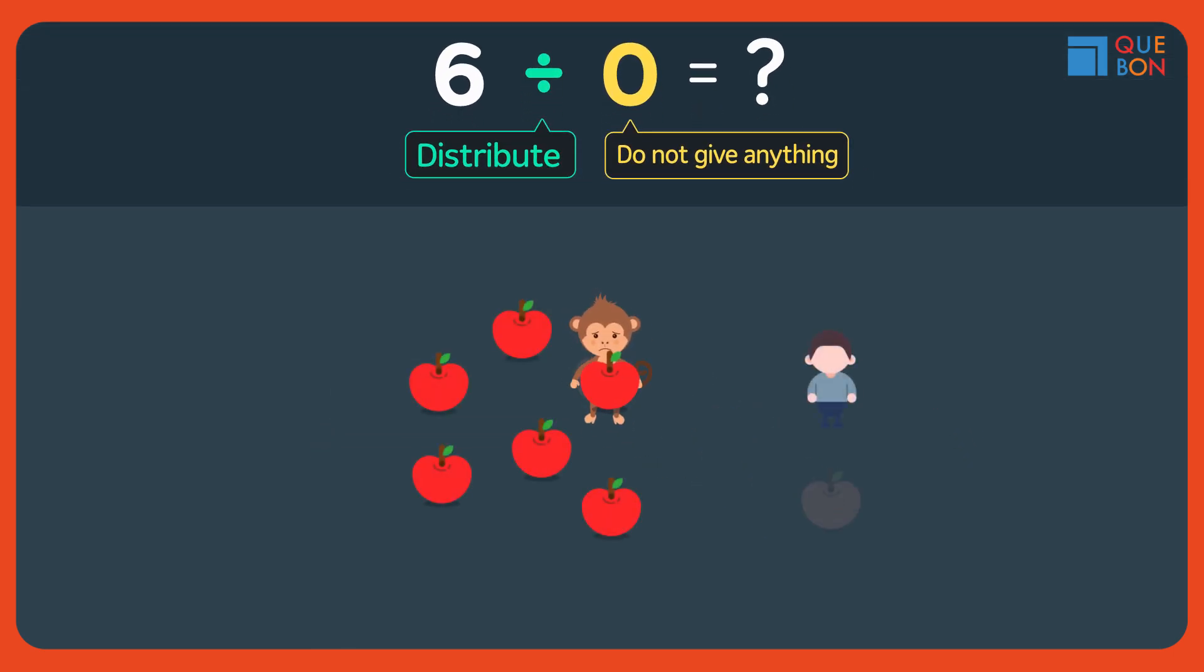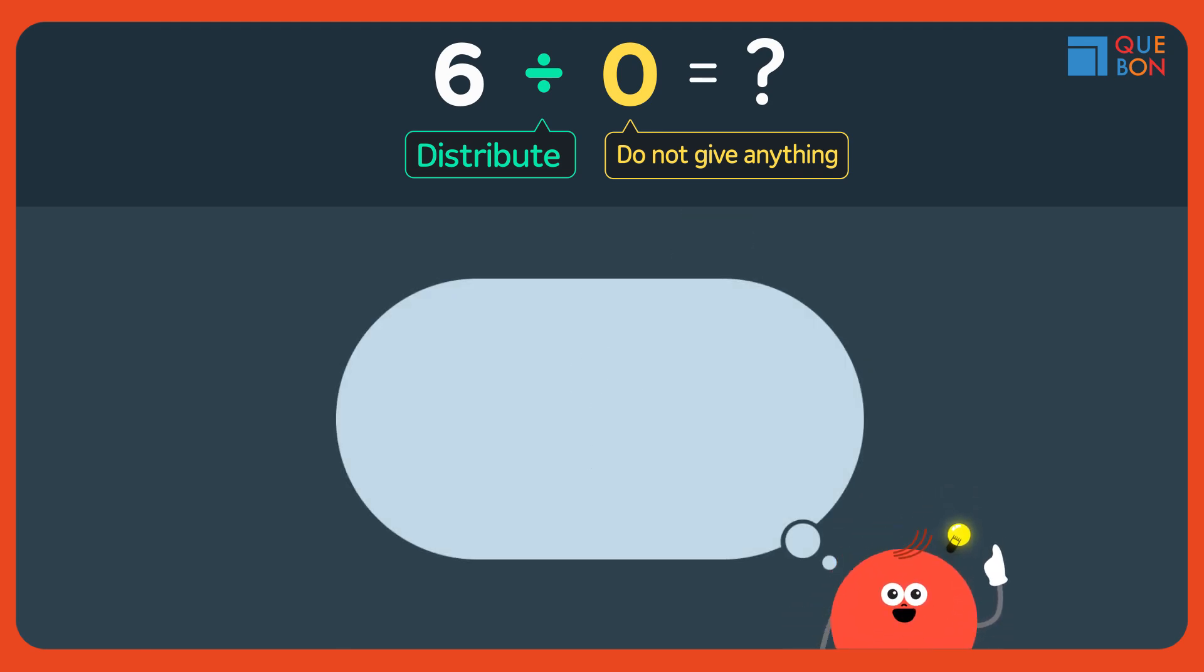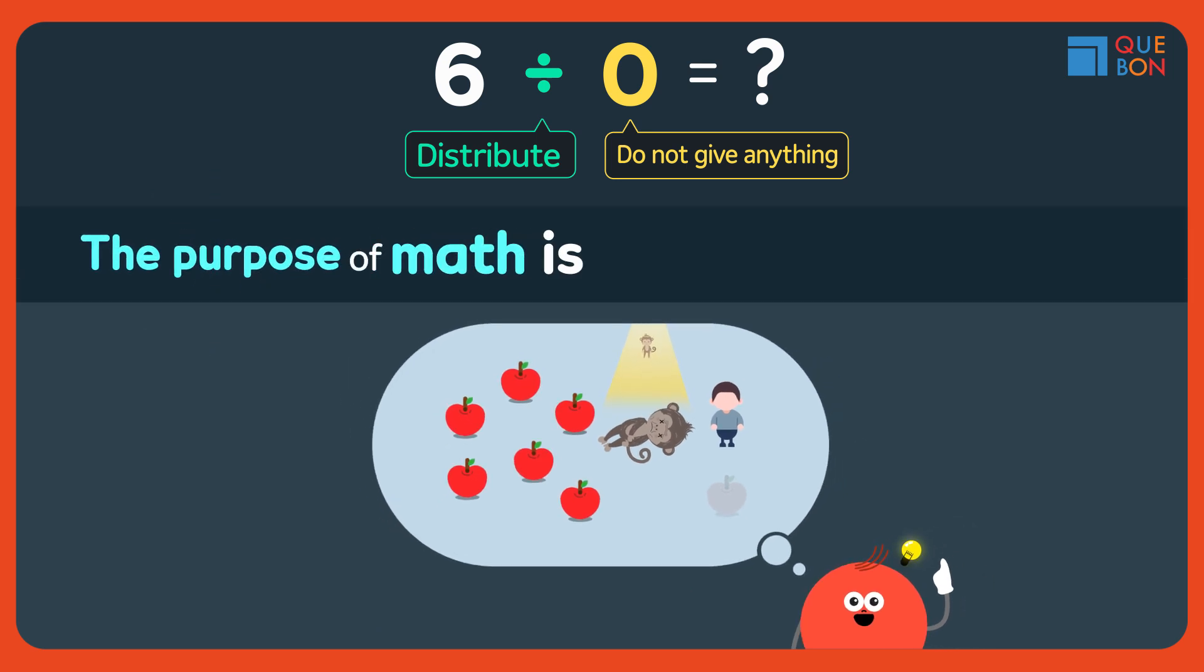Sharing apples. Monkeys dying. Like this, we should be able to use our imagination and create images. Color it. Make sounds. And animate it.